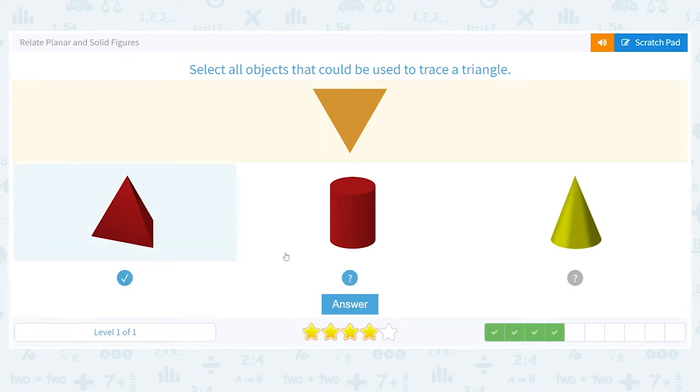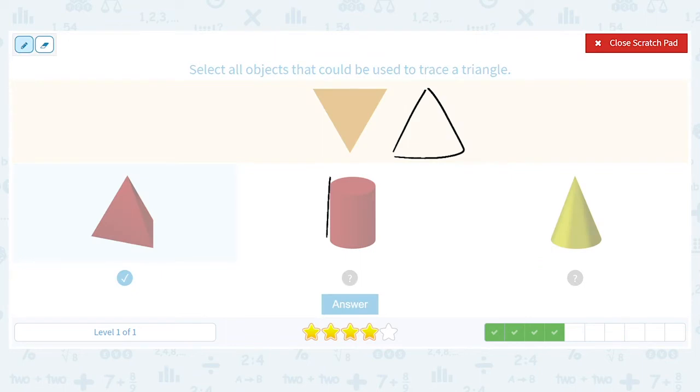That means either the cylinder or the cone would work. If I lay this cylinder down and I trace around it, I am not getting a triangle. I'm getting a rectangle.